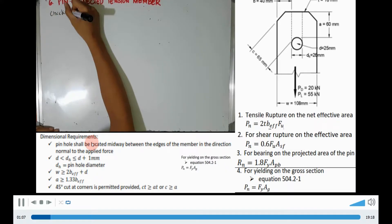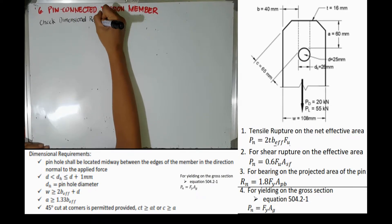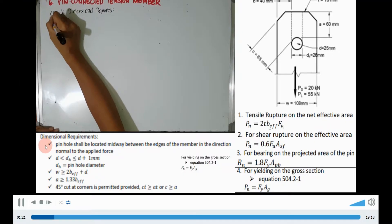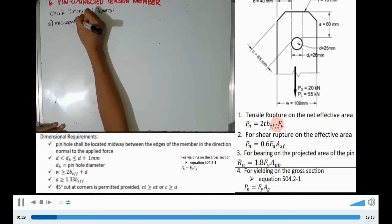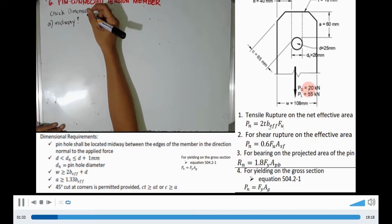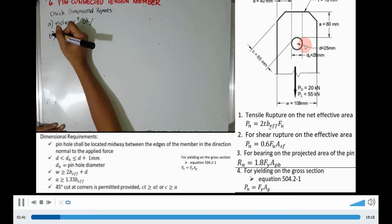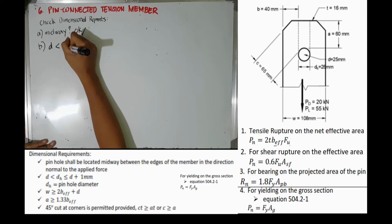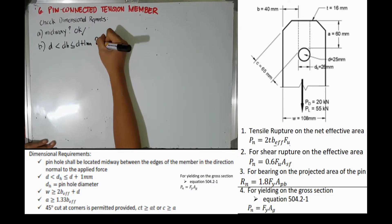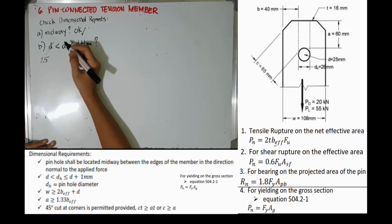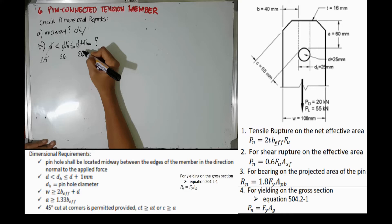We will check whether the dimensional requirements are being satisfied. First, the pinhole shall be located midway between the edges of the member in the direction normal to the applied force — as shown, it is located midway between the edges. For the second condition, the pin diameter must be less than the diameter of the hole, and the hole diameter must be less than or equal to the pin diameter plus 1 mm. Substituting the values, this condition is satisfied.